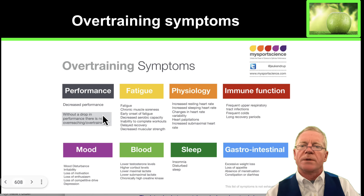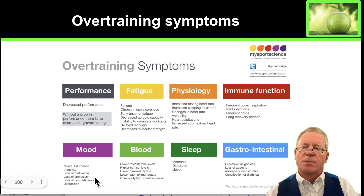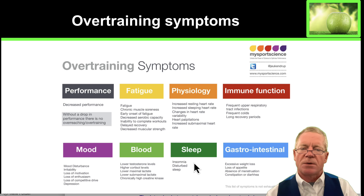Overtraining symptoms include poor performance, fatigue, increased resting heart rate, increased resting sleeping rate, and frequent infections — particularly upper respiratory tract infections. You also see mood disturbances, loss of motivation, loss of enthusiasm, loss of competitive drive, low testosterone levels, low cortisol levels, changes in blood lactate, and oftentimes insomnia or disturbed sleep and gastrointestinal problems, sometimes massive weight loss.